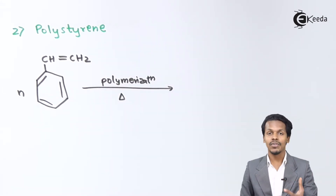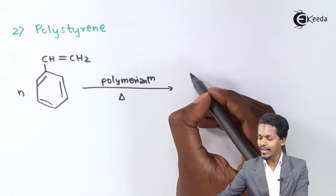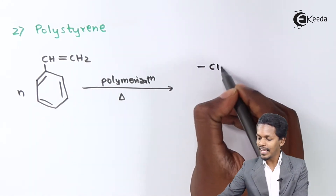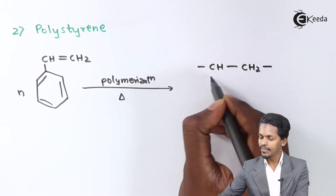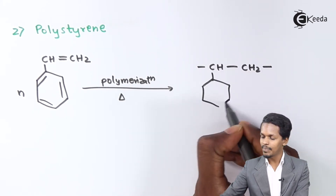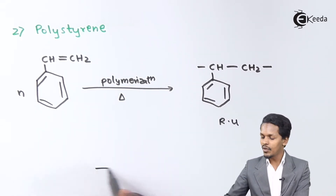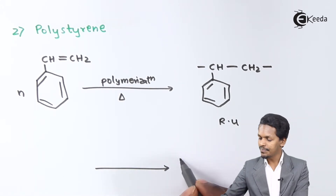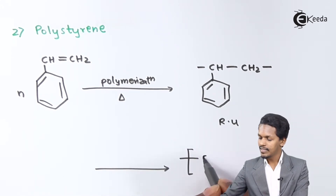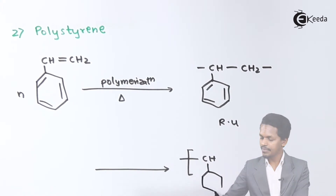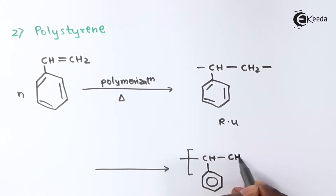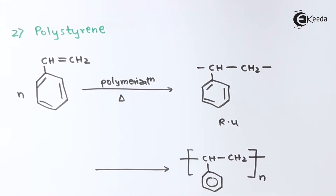By providing a certain catalyst or initiator, the repeating unit we get is –CH(Ph)–CH2–, where Ph represents a phenyl or benzene ring. Ultimately the product we get, with n repeating units, is polystyrene. That was the second example of an addition polymer.